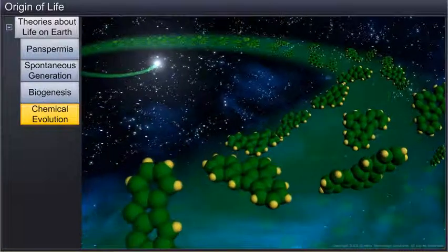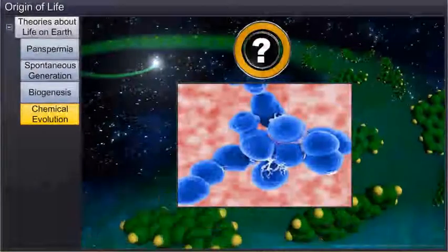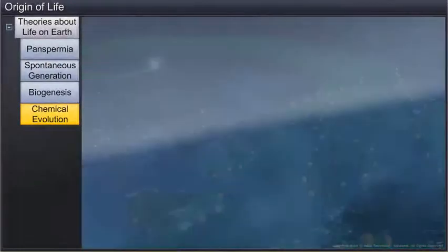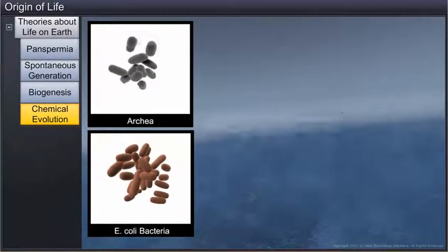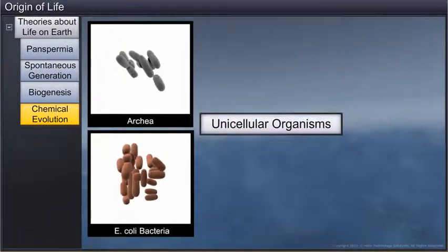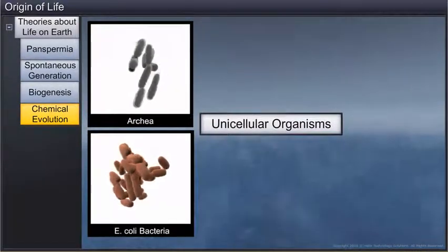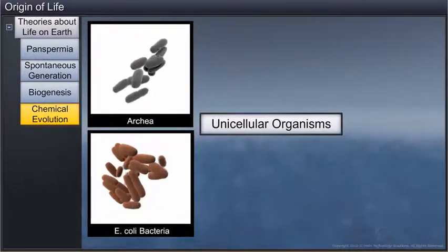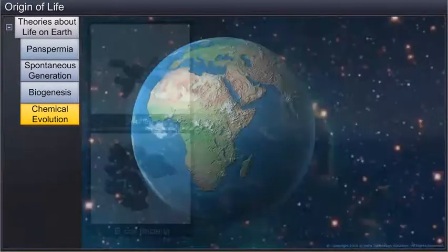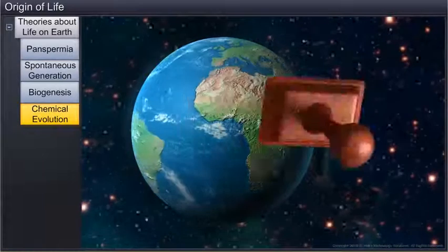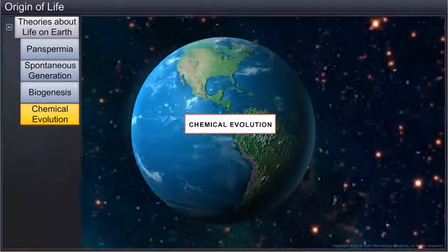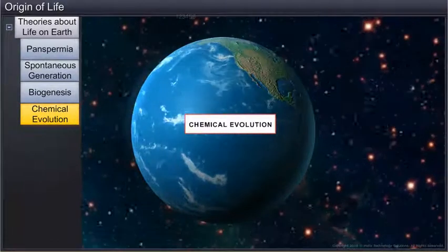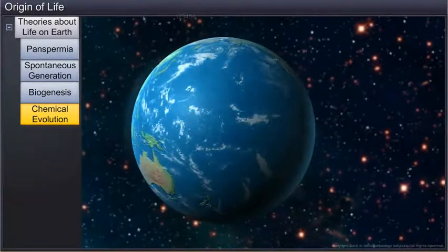However, there were still doubts about how the first cell came into existence. Cellular forms of life originated around 2000 million years ago as unicellular organisms in water. It is probable that all life forms originated in a water environment. This theory of chemical evolution, which explains that first life forms arose from non-living molecules through evolutionary forces, is now widely accepted.